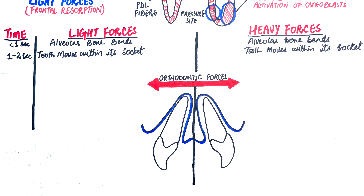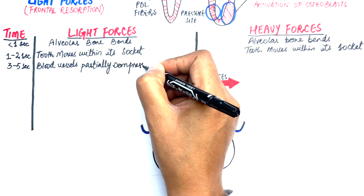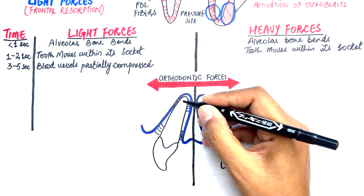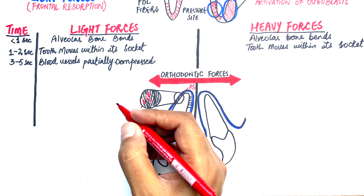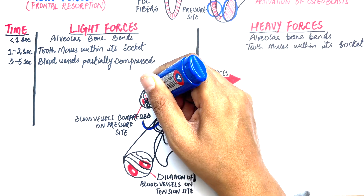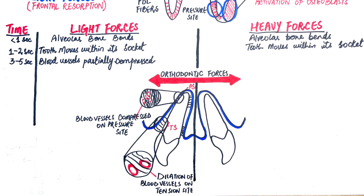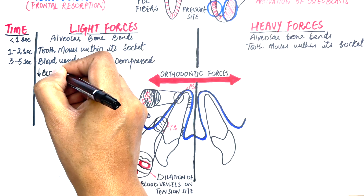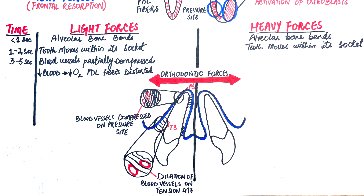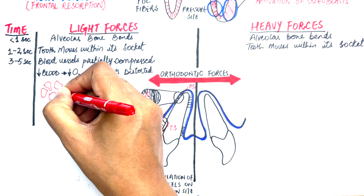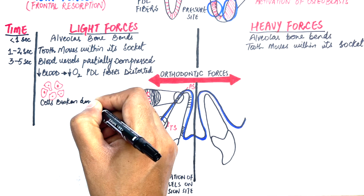With continued and sustained light forces, blood vessels will be partially compressed on the pressure site and dilated on the tension site. This causes a reduction in blood flow and also a reduction in oxygen flow through the blood on the pressure site. The PDL fibers and the cells within the PDL space will be distorted, and this distortion causes tissues to break down into pieces.